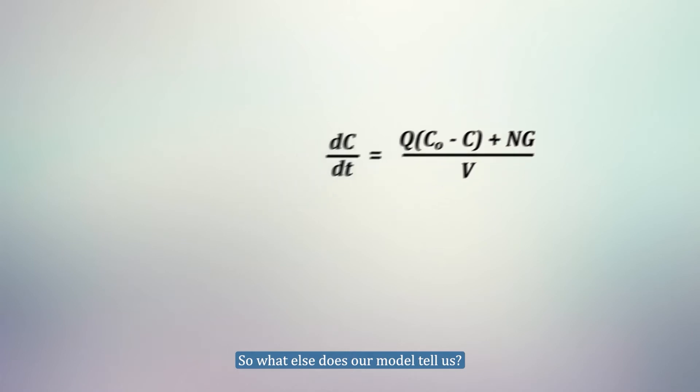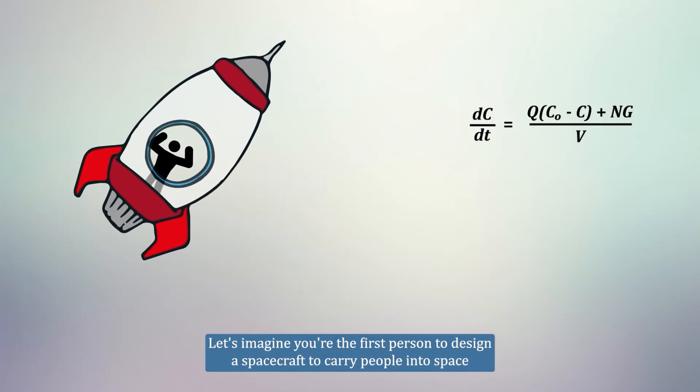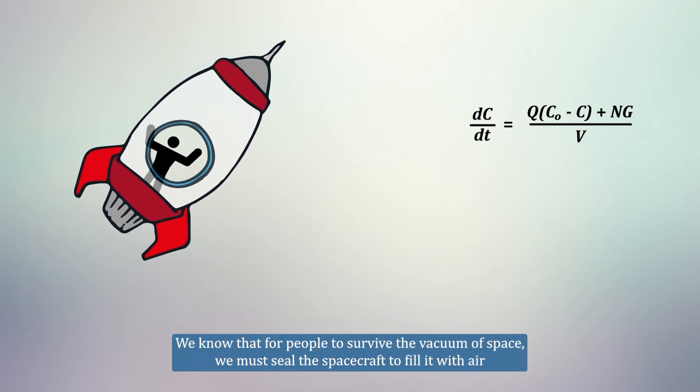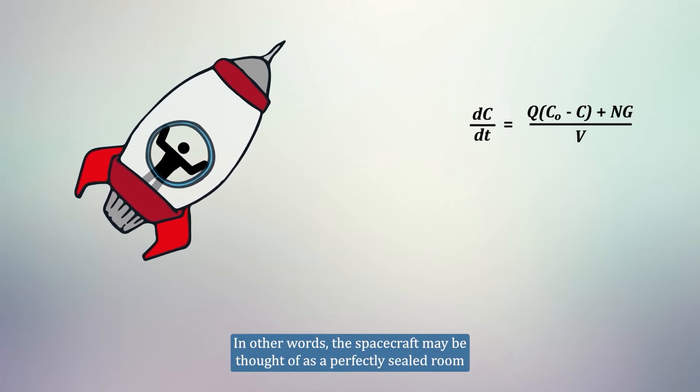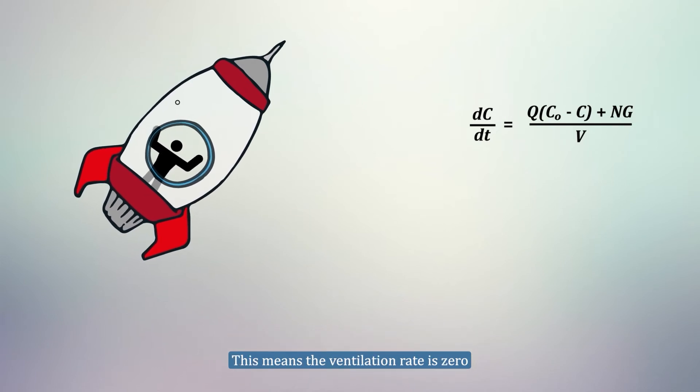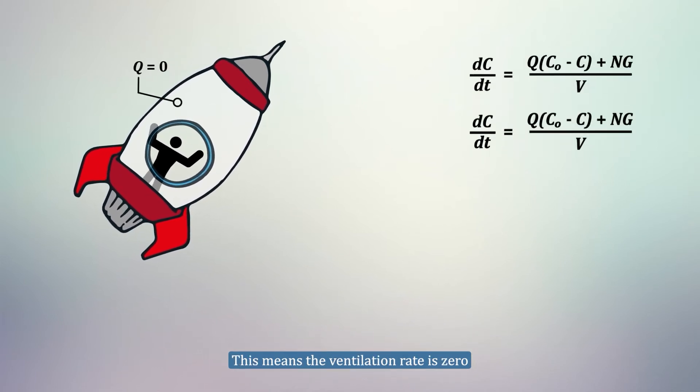So, what else does our model tell us? Let's imagine you are the first person to design a spacecraft to carry people into space. We know that for people to survive the vacuum of space, we must seal the spacecraft to fill it with air. This means no air leaves or enters the spacecraft. In other words, the spacecraft may be thought of as a perfectly sealed room. This means the ventilation rate is zero.